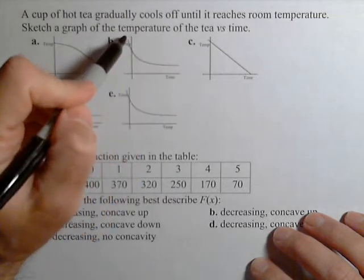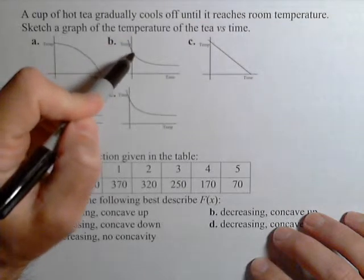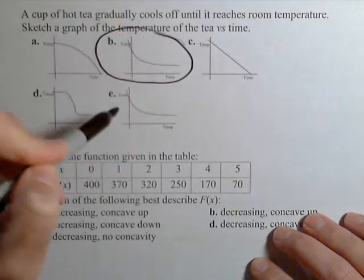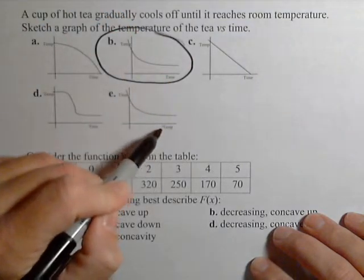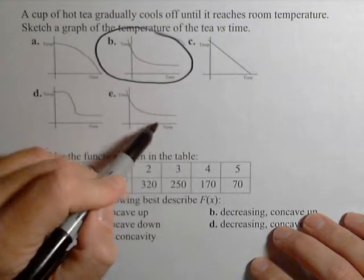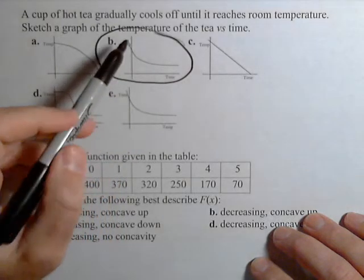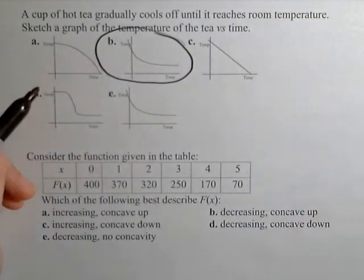So B is the one where it cools off quickly at first, and then a little slower over time. Now I know it looks like E, but notice that the axes labels have been reversed, so that changes around what the graph should look like. So B is gonna be our correct answer there.